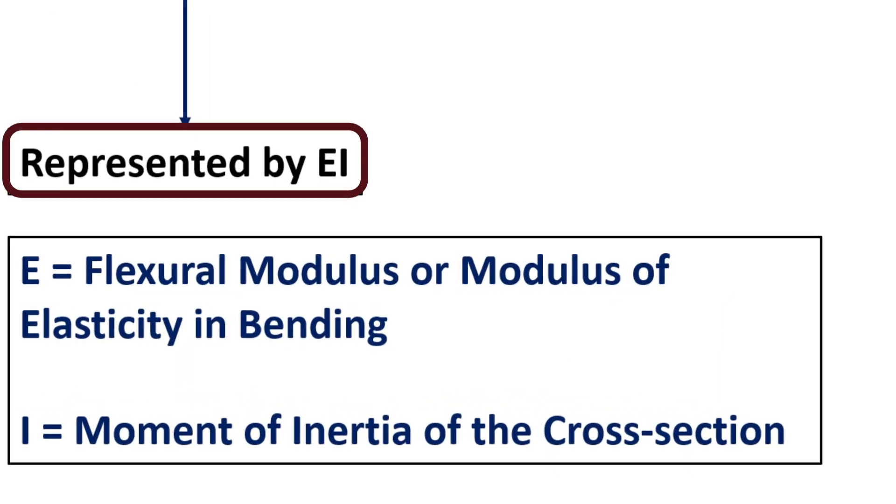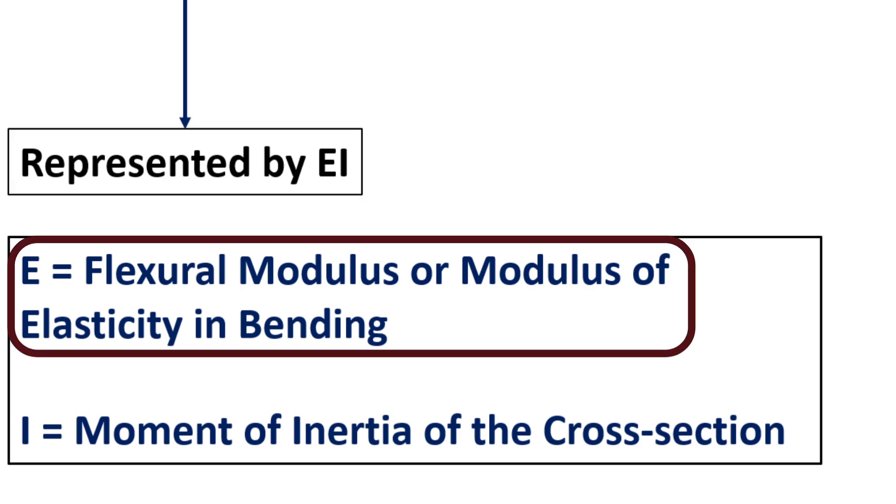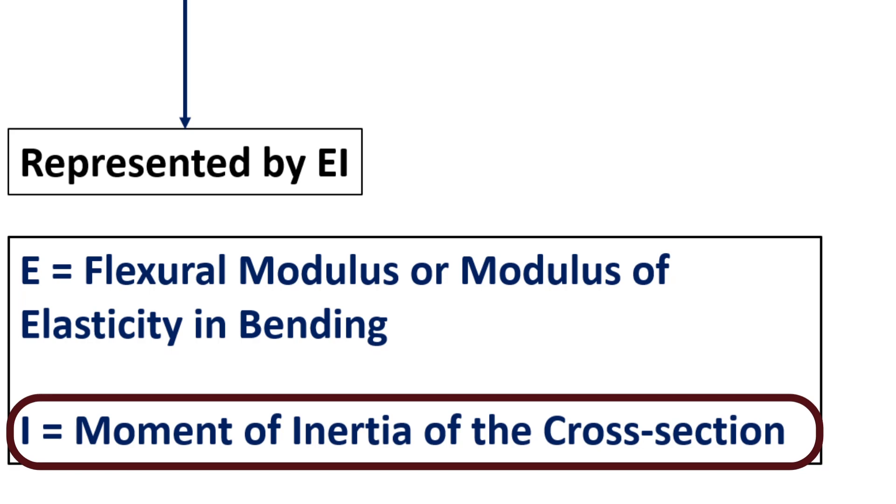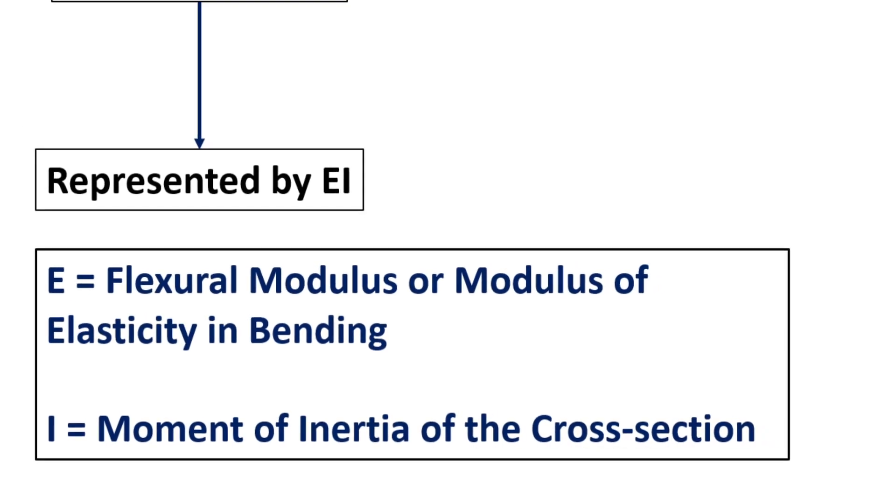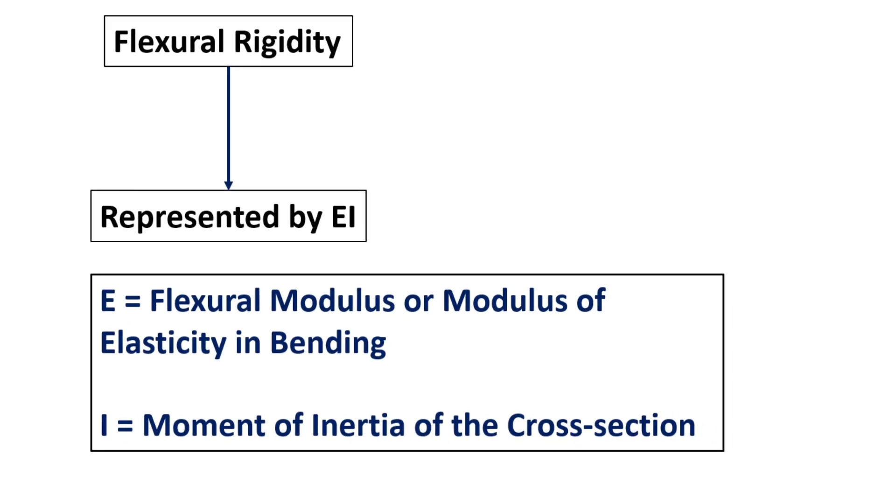The rigidity of a beam is represented by EI where E is the flexural modulus or modulus of elasticity in bending and I is the moment of inertia of the given cross section. In other words, the ability of a beam is determined by its moment of inertia which indicates the resistance created within the beam.